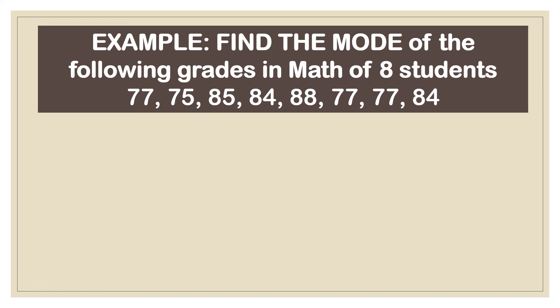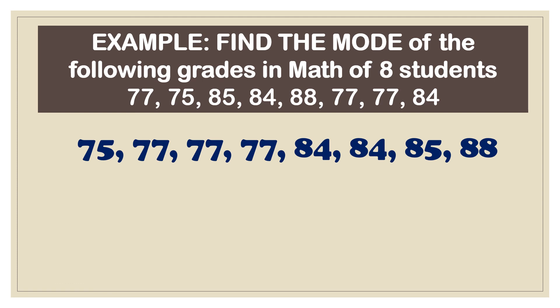Example number 3, find the mode of the following grades in math of 8 students. When we arrange it, it's immediately clear that 77 is our mode. This is unimodal. By the way, or in addition, if there are 2 modes in a given set of data, it's also called bimodal.